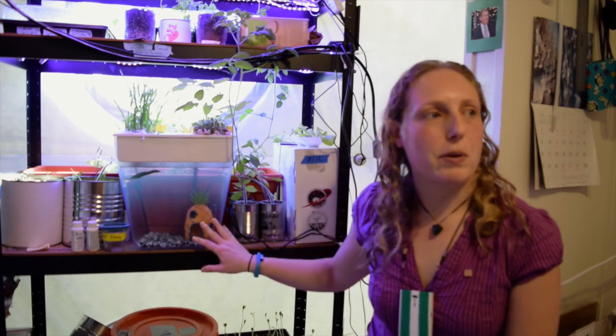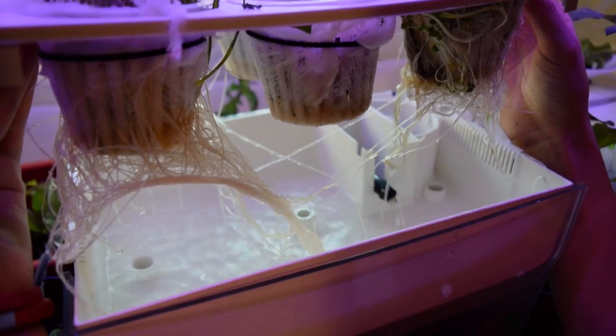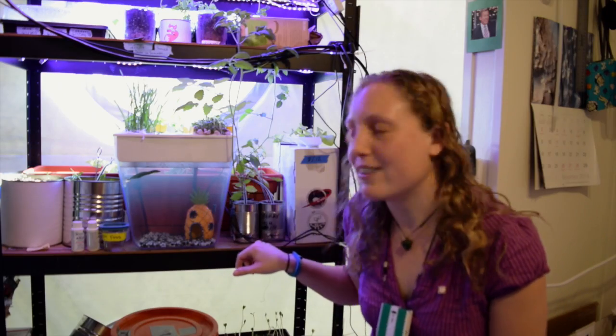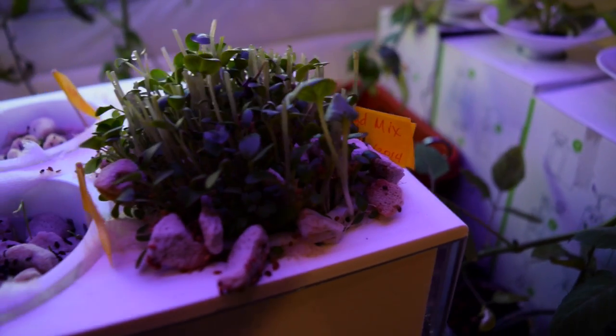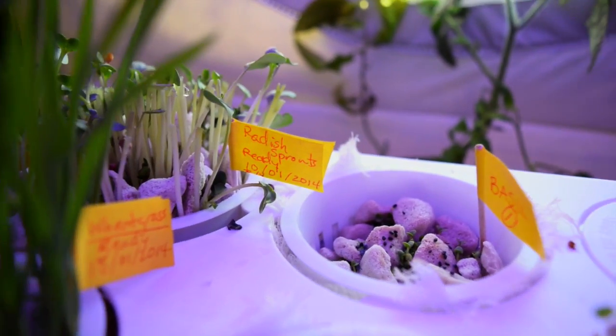We have aquaponics - it's just water down here with fish, I don't know if you can see them right now, and then plants growing out of that. We have wheat grass, some basil that hasn't taken yet, some salad mix, and radish.